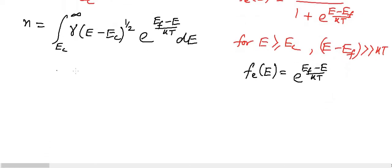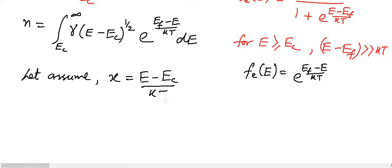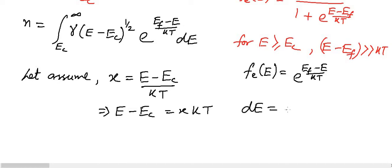Now we have to evaluate this integral. We assume a substitution: let x equal (E minus E_C) / kT. From here we can write E minus E_C equals x·kT.